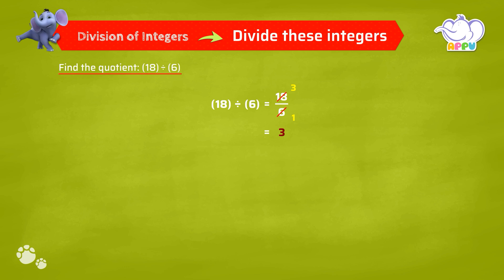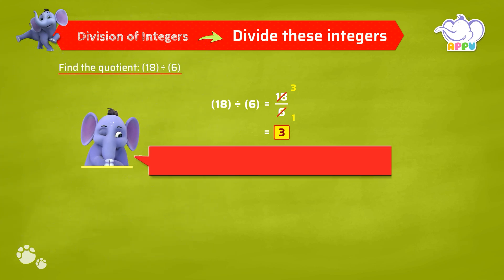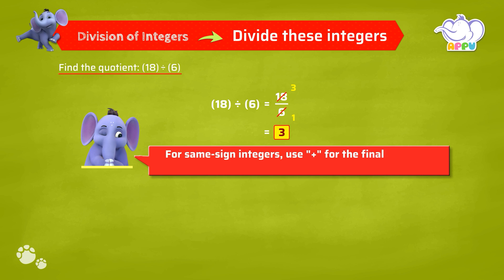We have to place the sign for this quotient. Here, 18 and 6 are both positive integers, so the answer is 3. We do not use the plus sign. For same sign integers, use plus for the final answer.